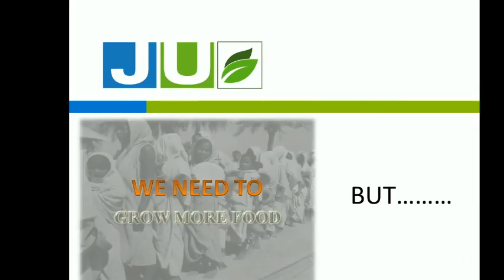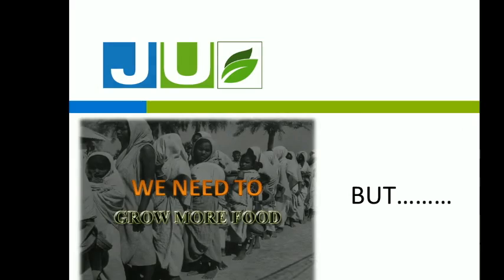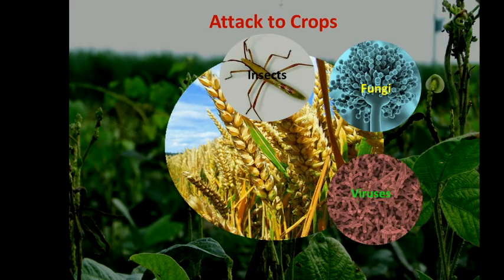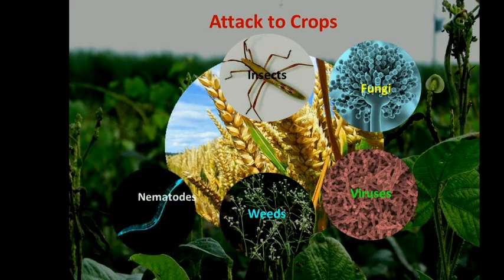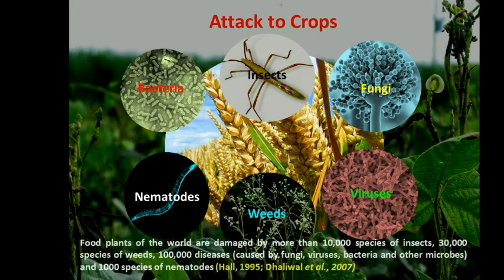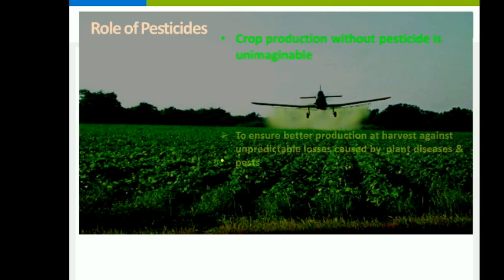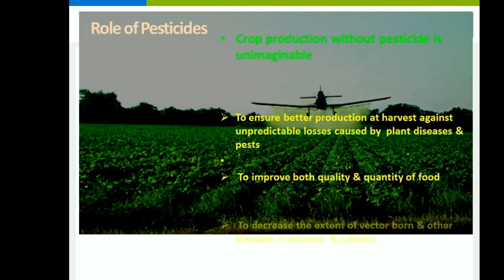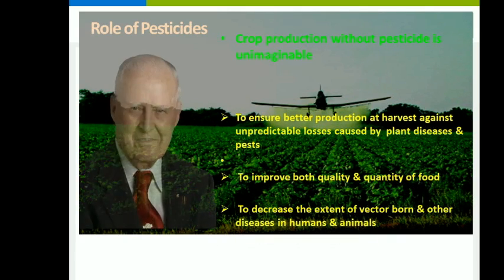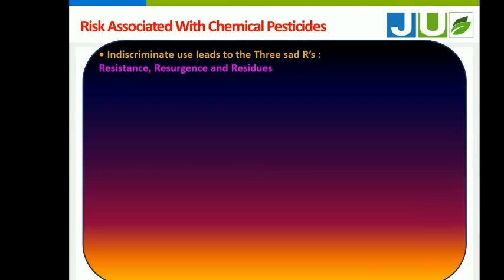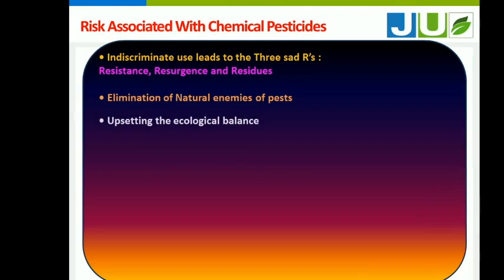We need to grow more food. But attacks of insects, fungus, virus, weeds, nematodes, and bacteria reduce it. Here the role of pesticides comes into existence. Crop production without them seems unimaginable. To ensure better production we need them.